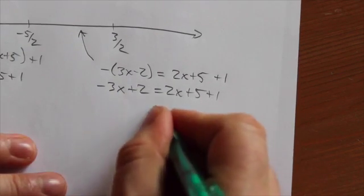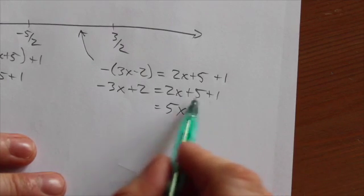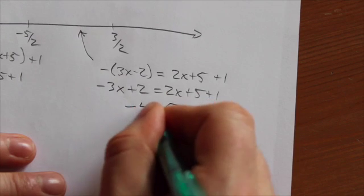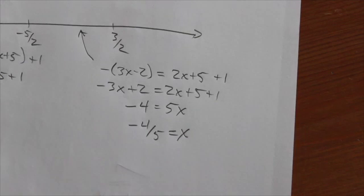Now let's move the negative 3x over. So that's actually going to become 5x over here. This is 5 plus 1 is 6. I'll move that over to this side. I'm going to get negative 4. So negative 4 fifths is equal to x.